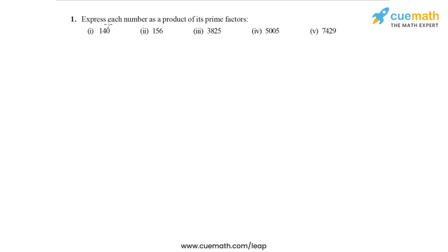In question 1, we have to express each number as a product of its prime factors. To do that, we will build a factor tree for each number. Let's start with the first number, which is 140.